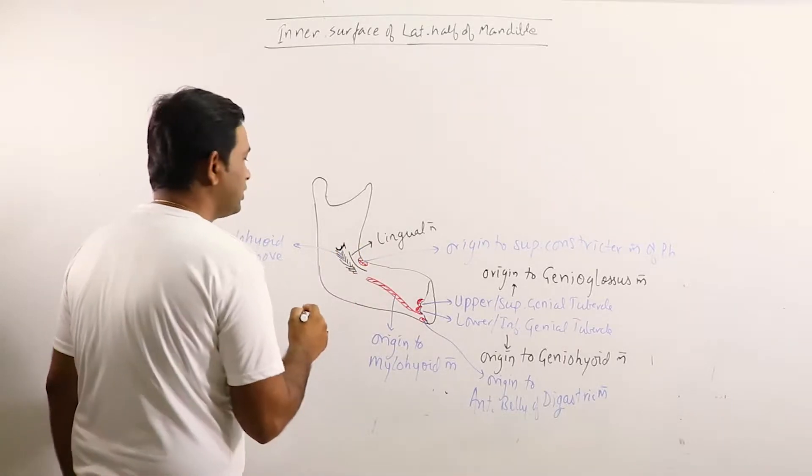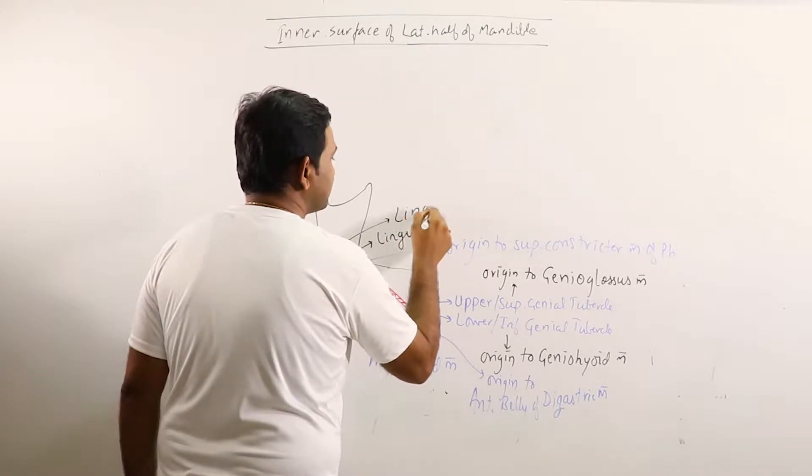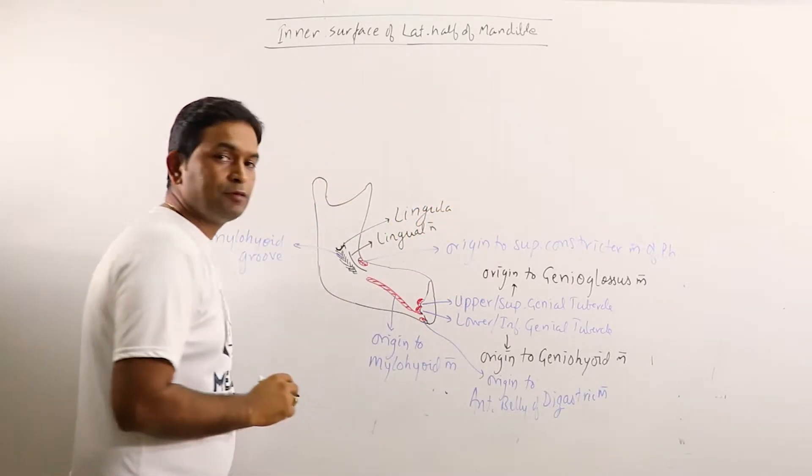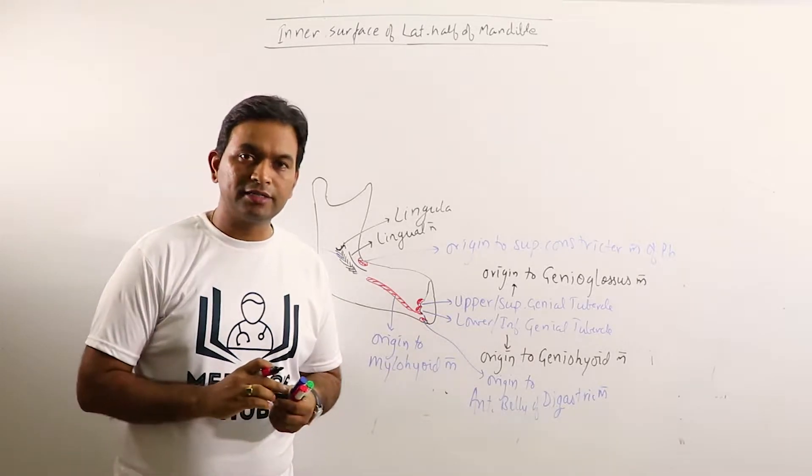There is a ridge, prominent ridge with a spine. This is known as lingula. Lingula is basically the point at which the sphenomandibular ligament is attached.